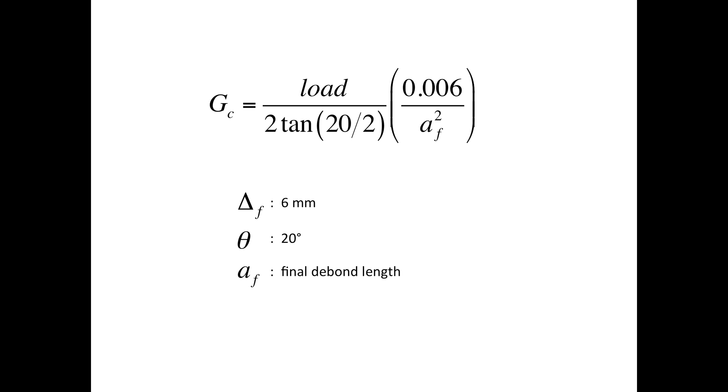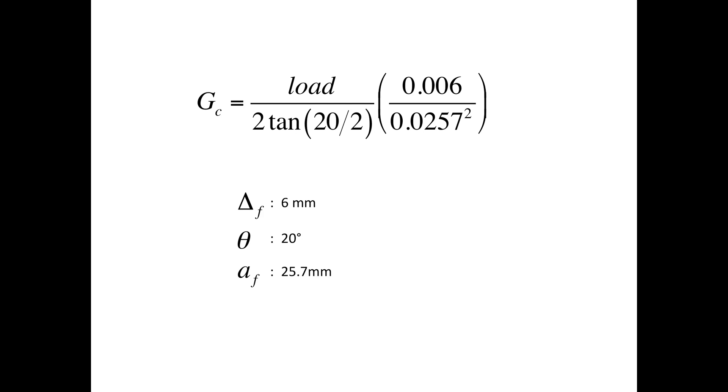And the final debond length is something we evaluate from the sample after the conclusion of the test. I've demonstrated how to do that in some previous videos. In the current example, our final debond length was 25.7 millimeters. So we can enter that into the equation.